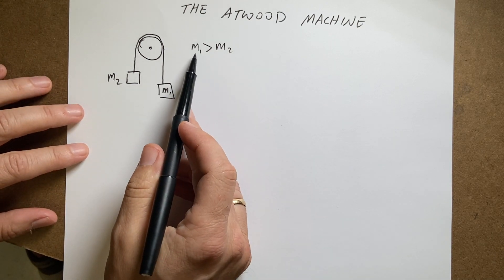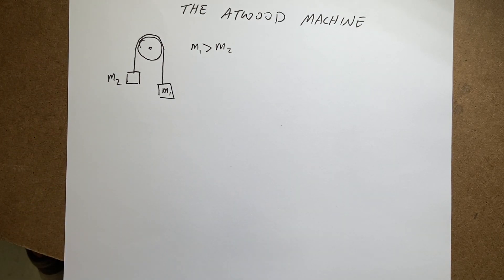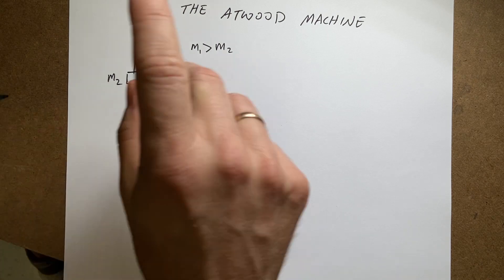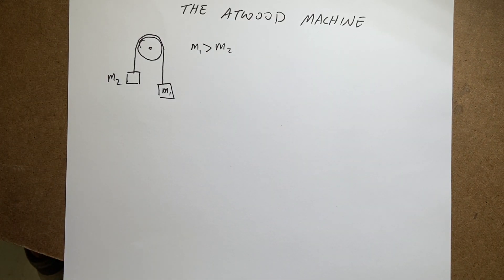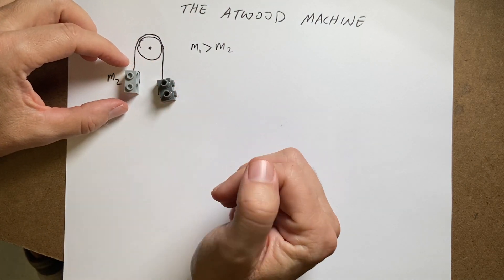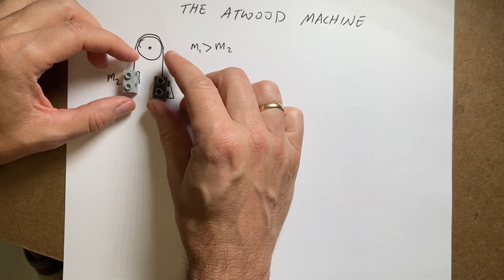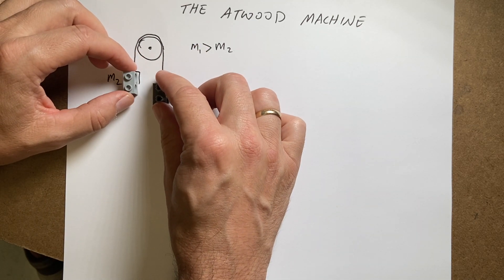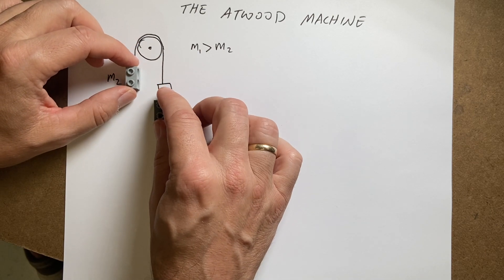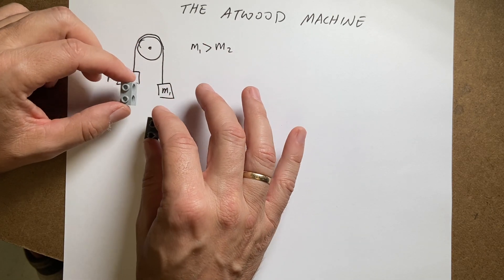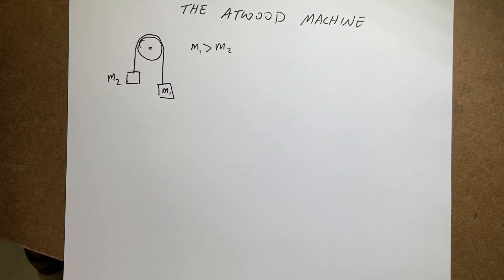In this case, I'm going to say mass one is greater than mass two. So we can already imagine what's going to happen, right? If I take these two Lego pieces, there's my two masses right there. And if this one has more mass, we know this one's going to move down and that one's going to move up. Will it accelerate? Will it move at constant speed? Let's find out.